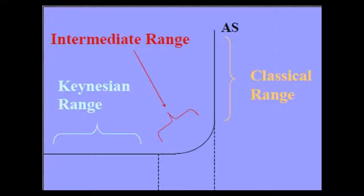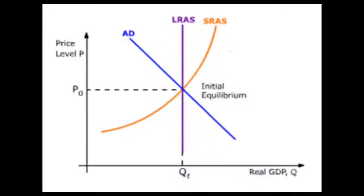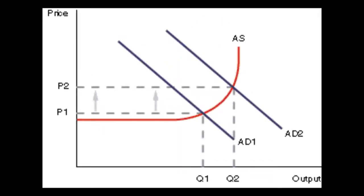You may ask what that second line is — well, that's our aggregate supply curve. The aggregate supply curve is split into three sections: the Keynesian range, the intermediate range, and the classical range. Where aggregate supply and aggregate demand intersect, this is our country's equilibrium. As aggregate demand increases and decreases based on factors previously discussed, it can cause changes in price levels and also changes in total real output.